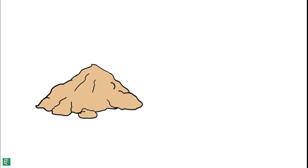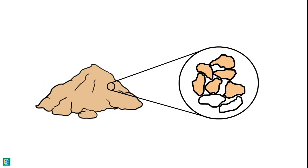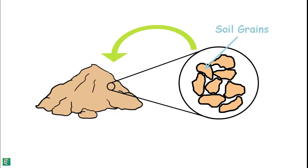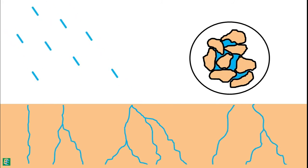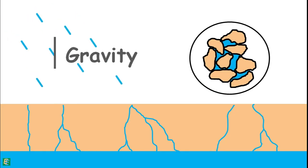A soil mass is composed of small solid particles which we call the soil grains. These soil grains, when depositing in a soil mass, arrange themselves in a way that some amount of empty space is enclosed between them. We call these spaces voids. When rainfall occurs on this soil surface, the rain water percolates through these voids and flows down through the soil under the influence of gravity.